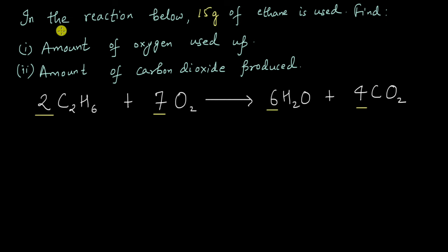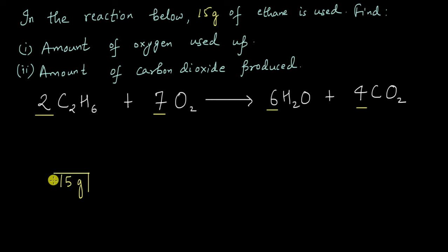In the reaction below, 15 grams of ethane is used. What we know here is that 15 grams of ethane is being used in this reaction. What we want to find is the amount of oxygen that is used and the amount of carbon dioxide that is produced.